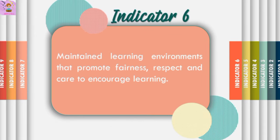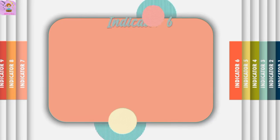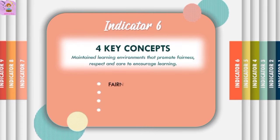Indicator 6 is to maintain learning environments that promote fairness, respect, and care to encourage learning. The four key concepts are fairness, respect, care, and encourage learning. Fairness means ensuring all students are treated equitably and have equal opportunities to learn — like making a game fair so nobody is at a disadvantage because of their background, ability, or personal circumstances. For example, this includes helping learners with disabilities during tests to ensure they can demonstrate their knowledge, just like everyone else.